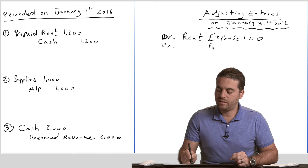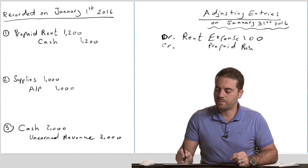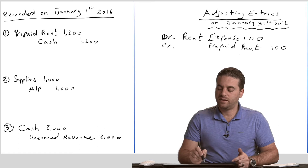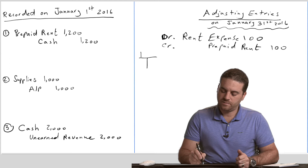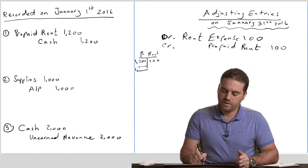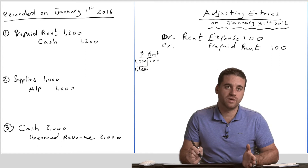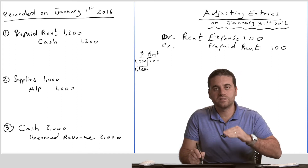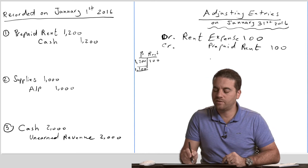The credit side will be prepaid rent because it's decreasing, and as we know, any asset decreases with a credit — $100. After recording that, the ending balance for prepaid rent after decreasing it by $100: if you make a T-account for prepaid rent, we used to have $1,200 and now we're crediting it by $100, making the ending balance at January 31st only $1,100. We then record the exact same journal entry at the end of every month — end of February, March, and so on.